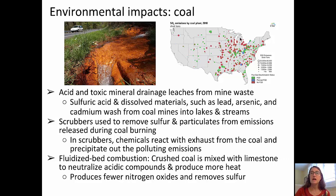In the top right map, you can see for the United States, sulfur emissions by coal plant in the year 2010. The size of the circle indicates the amount of emissions — the larger the circle, the greater the amount of emissions; the smaller the circle, the lesser the amount.